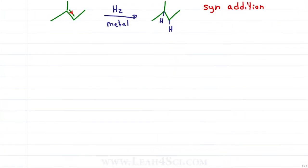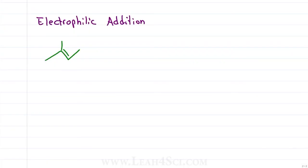The next set of reactions are called electrophilic addition, where the pi bond acts as the nucleophile and the thing we're adding is an electrophile. The mechanisms follow a similar pattern where the pi bond reaches for the electrophile and then we add across the pi bond.